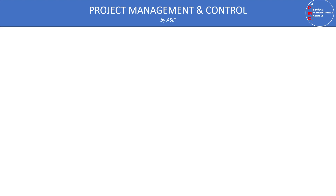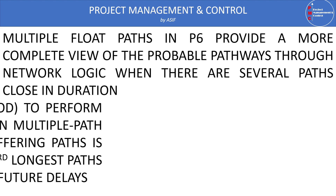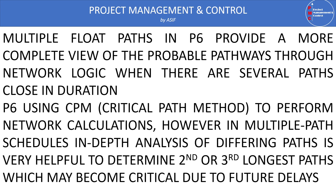When we are making any program in Primavera P6, we add activities, link them, provide relationships, and when we run the schedule, P6 calculates the network. There may be several possible paths in the network logic used to determine the critical path or near-critical path. P6 uses the Critical Path Method (CPM), where the critical path is the longest path in a program, determining the project duration. All activities on the critical path are called critical activities, and any delay in these activities can impact project completion.